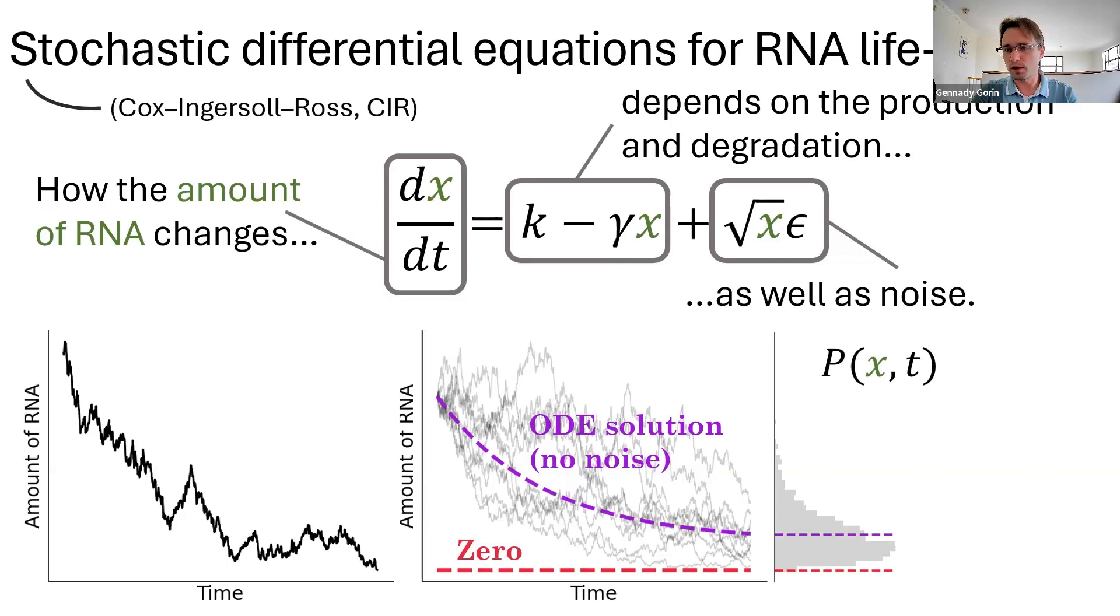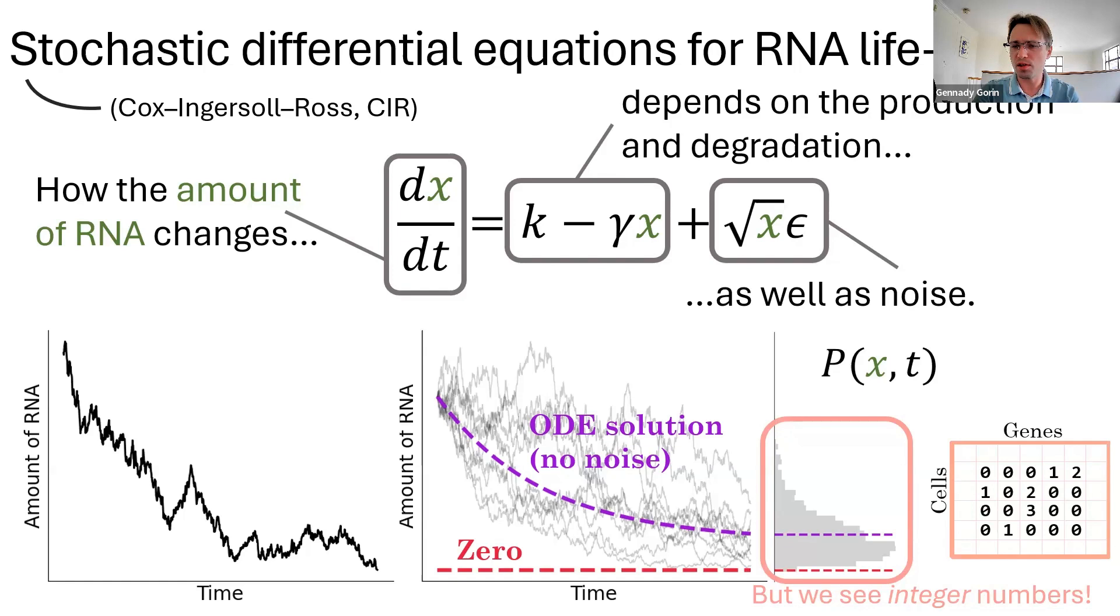And this is actually another finance model called the Cox-Ingersoll-Ross model. Seems good, right? Wrong. The problem is we can't really compare this to the data. The data are numbers like zero, one, two, and three, whereas the model gives us probabilities of numbers like 1.5 and one-third. So, there's a mismatch.